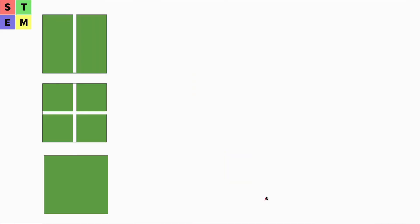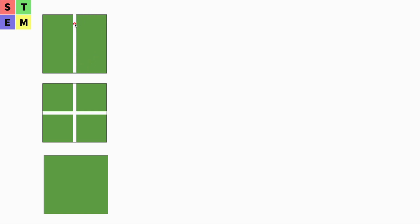Let's take a look at what we have here. We have our first object — this is a whole object — and it is being divided into two equal parts. So each equal part represents one half. Depending on how many equal parts I select, I will have a different result.